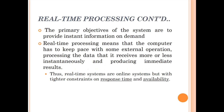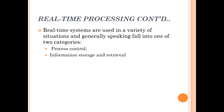The primary objectives of a real-time system are to provide instant information on demand. Real-time processing means that the computer has to keep pace with some external operation, process the data it receives more or less instantly, and produce immediate results. We can think of real-time systems as online systems but with tighter constraints on response time and availability. Real-time systems generally fall into one of two categories: they are either used for process control, or for information storage and retrieval.